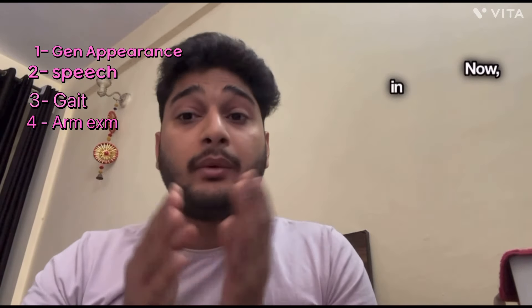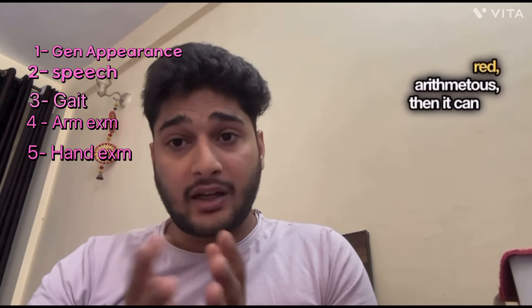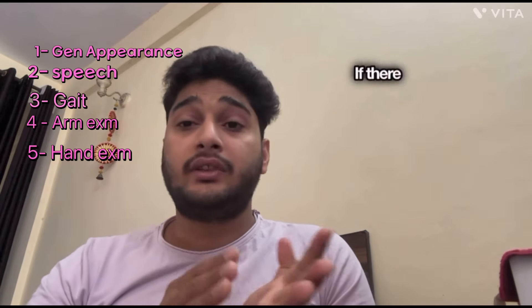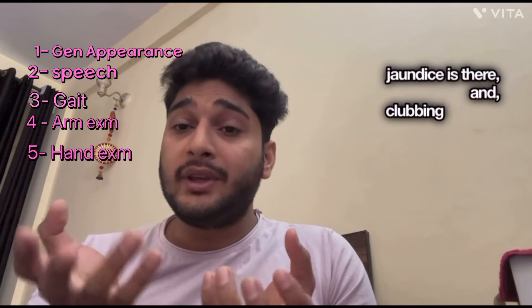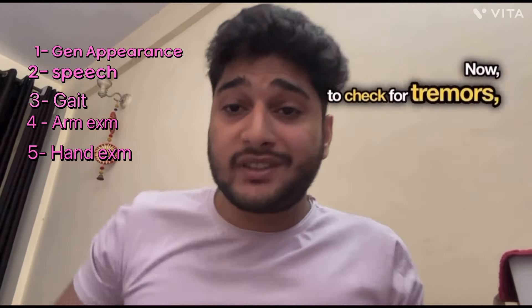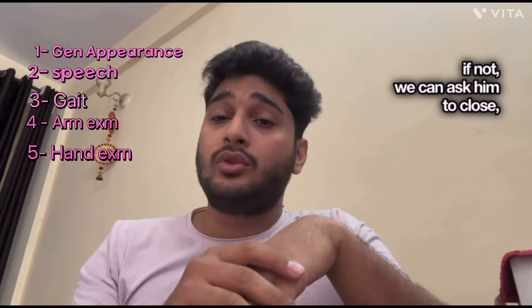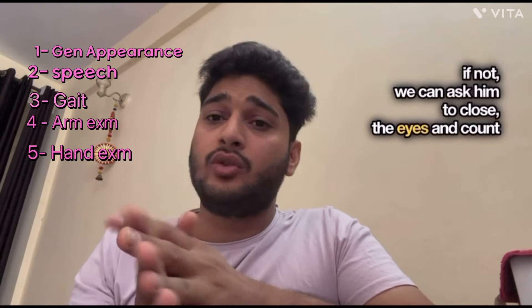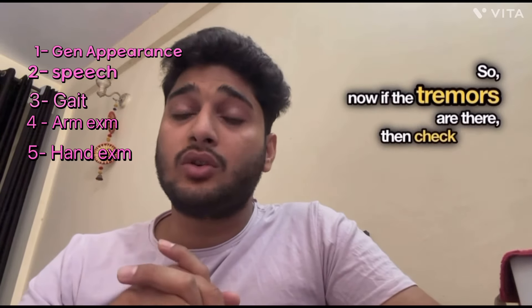In the hand examination, if the hands are sweaty and red or erythematous, that can be a feature of hyperthyroidism. If there are Dupuytren's contractures, jaundice, and clubbing, that can be a feature of chronic liver disease or alcohol use disorder. To assess tremors, ask the patient to show their hands. If a tremor is present it will be visible; if not, ask the patient to close their eyes and count backwards from twenty to one, which can bring out the tremors.